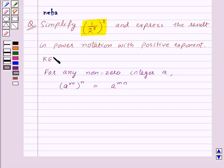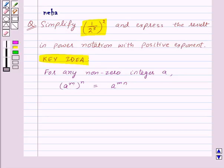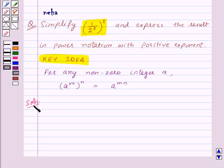Now let's see the solution. We have to simplify (1/2^3)^2. This can be written as 1^2 / (2^3)^2.